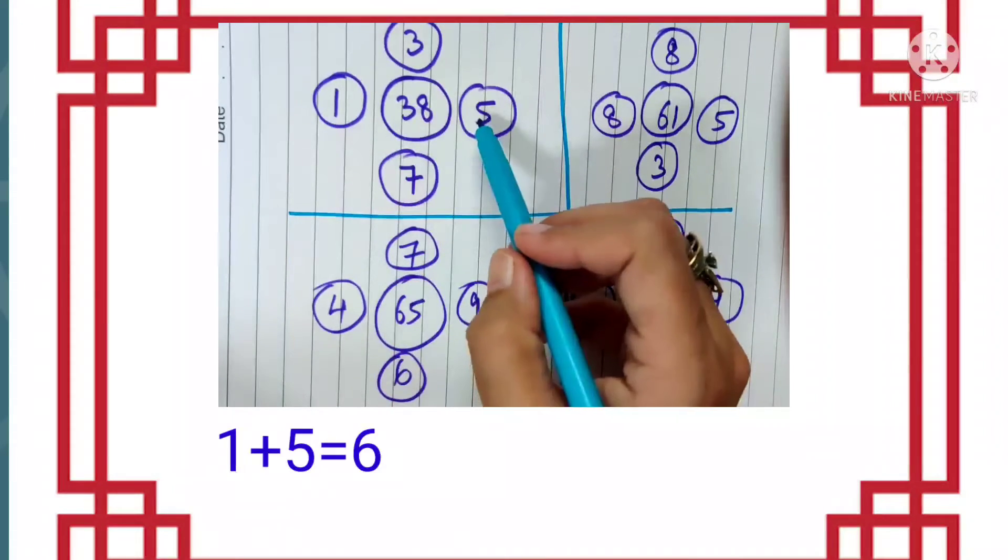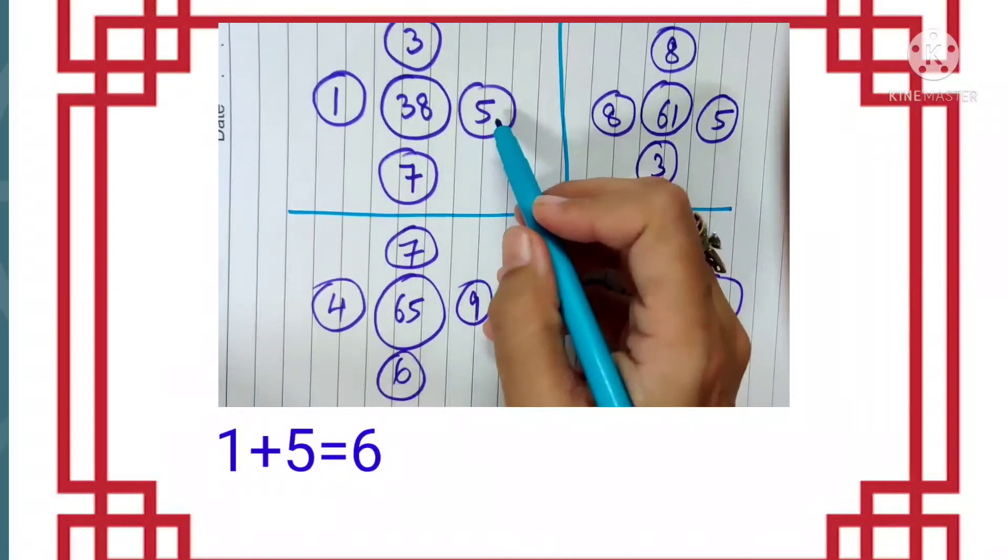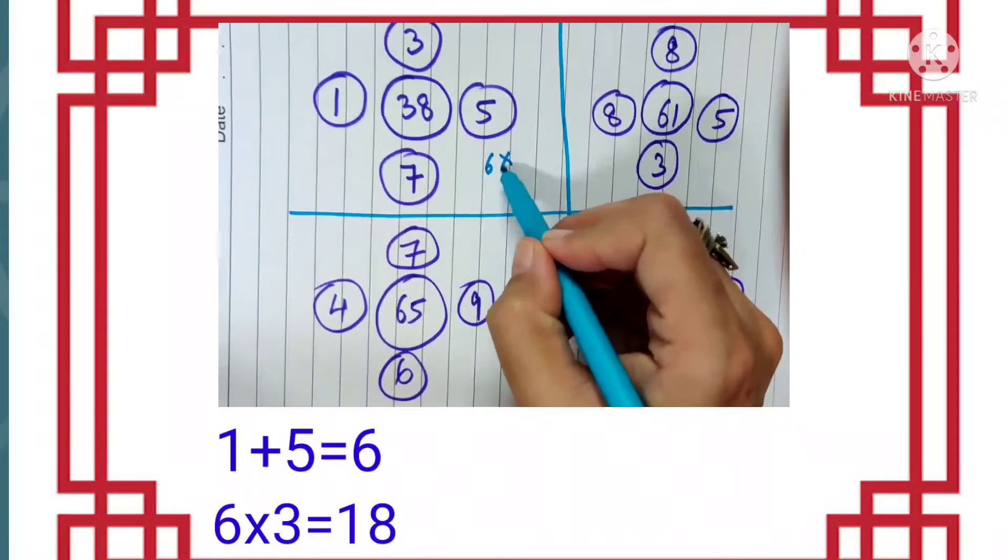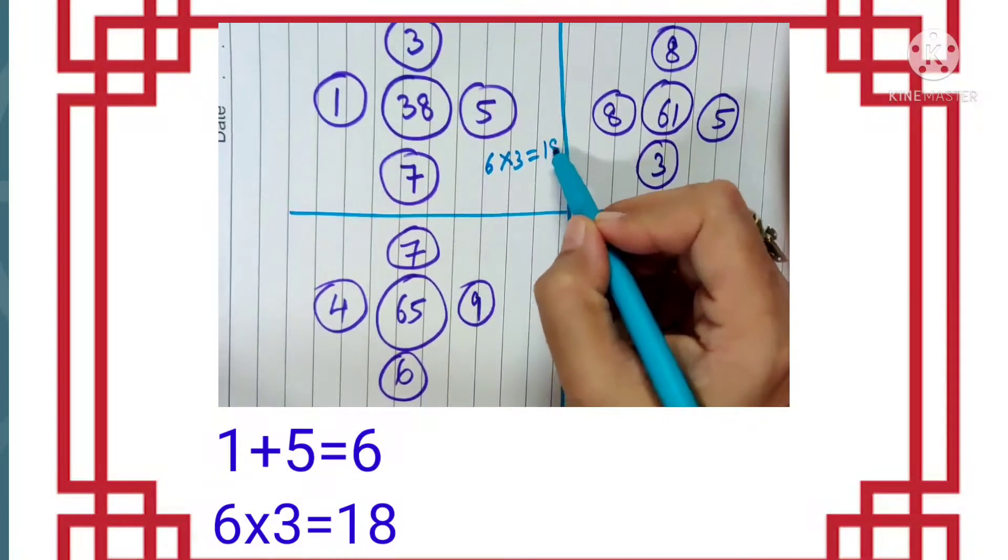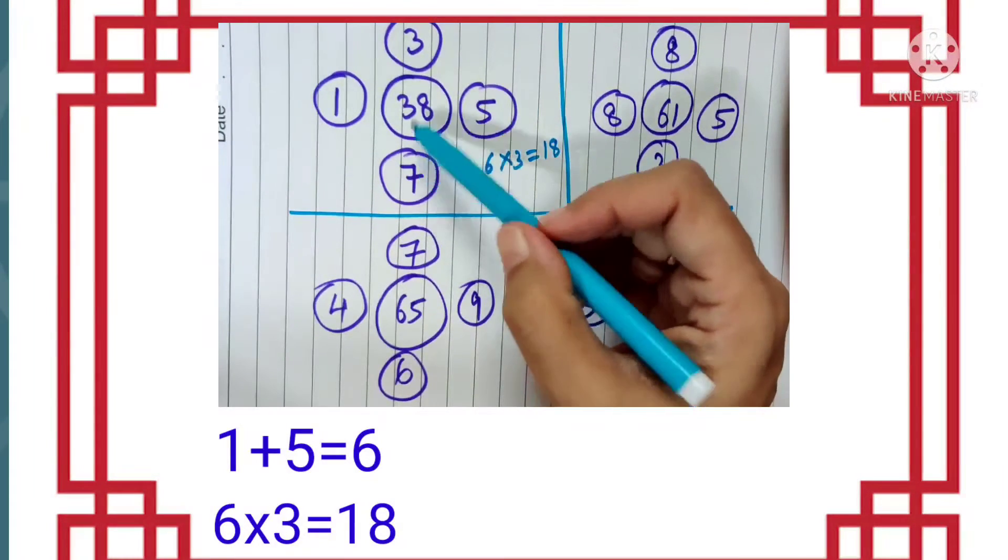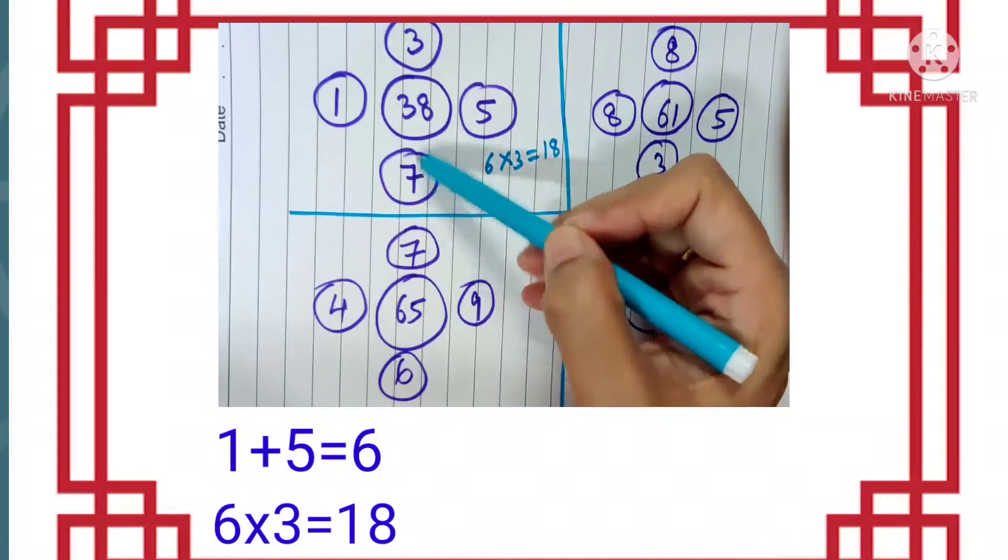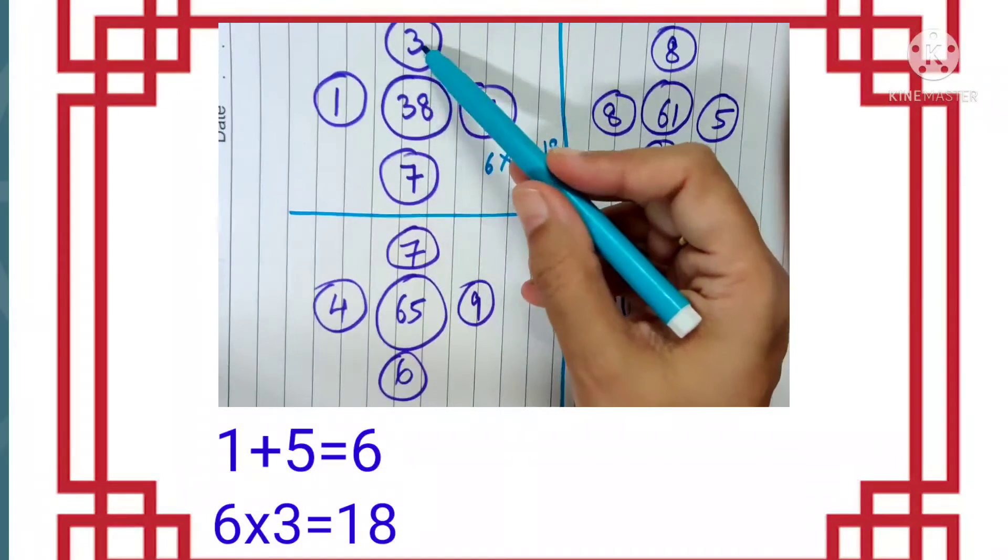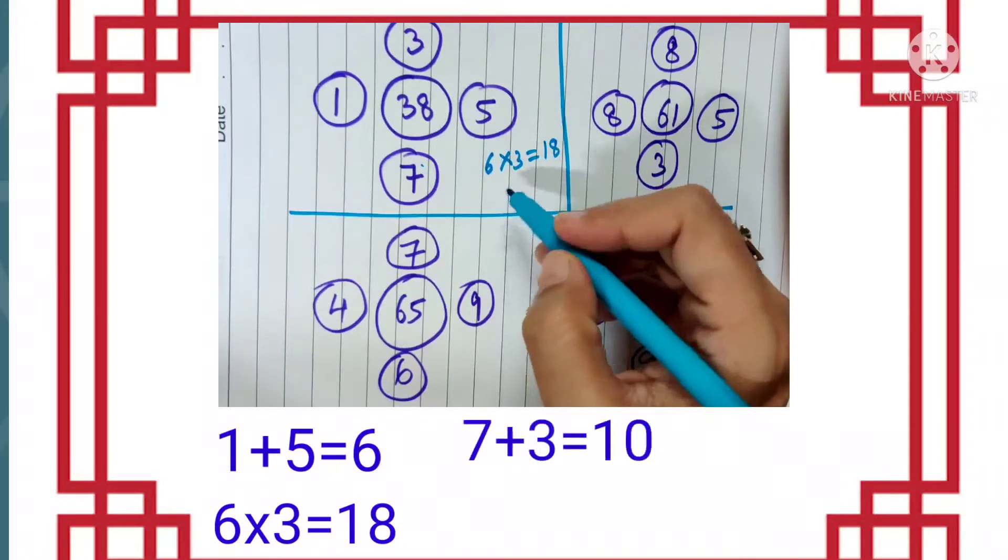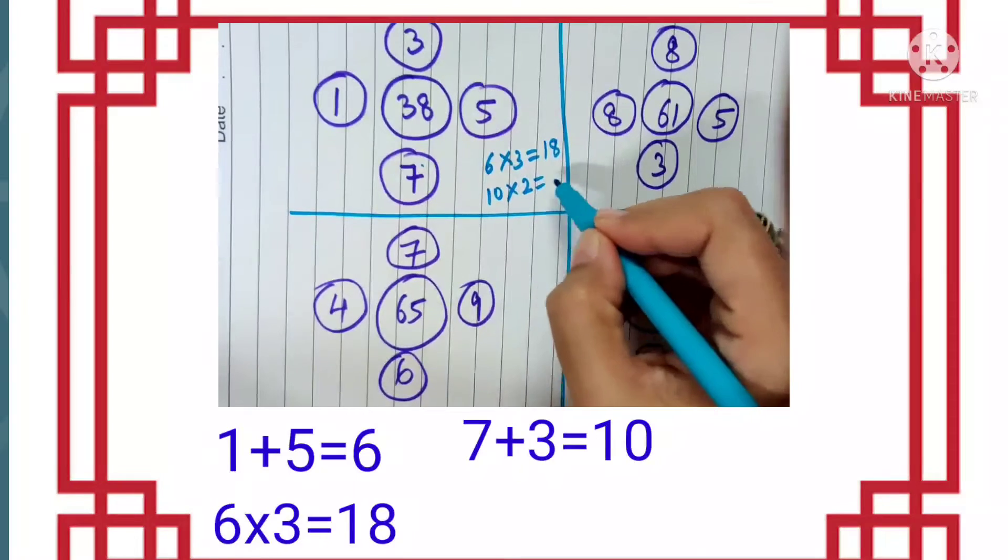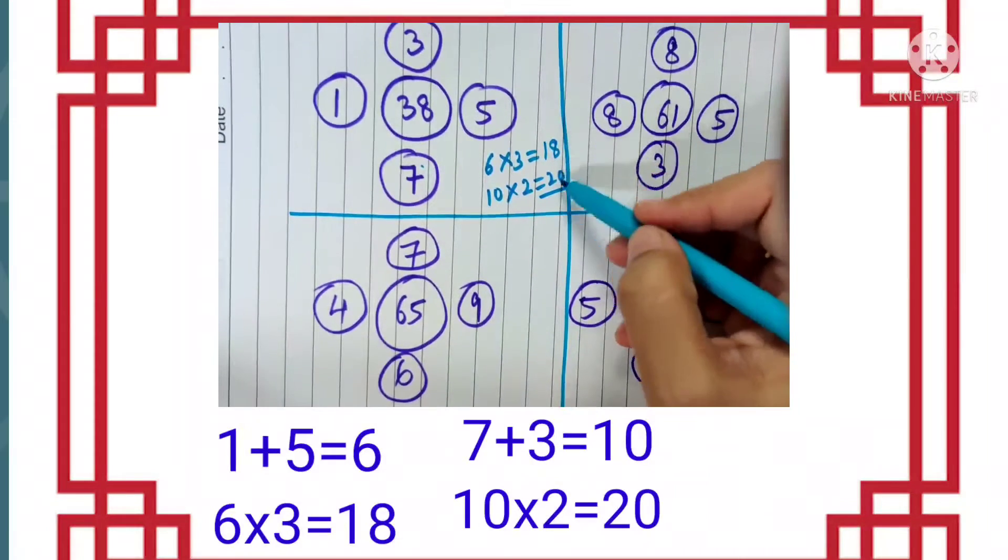So 1 and 5 when we add we get 6. 6 is multiplied by 3, that is 18. And then we add the numbers which are given on the vertical, that is 3 and 7. So 7 plus 3 is 10.